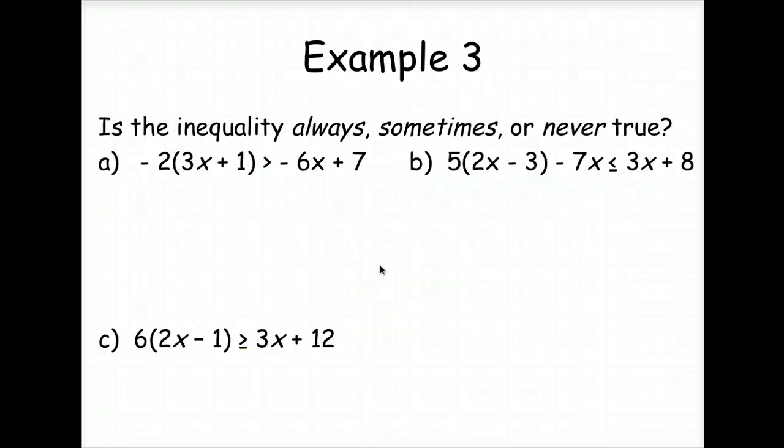Is the inequality always, sometimes, or never true? Well, let's find out. Let's start by solving this one. So let's distribute the negative 2 across the parentheses. Now let's start solving. If we add 6x to both sides, we end up with negative 2 is greater than 7. Is negative 2 ever greater than 7? It is never greater than 7. So this inequality will never be true.